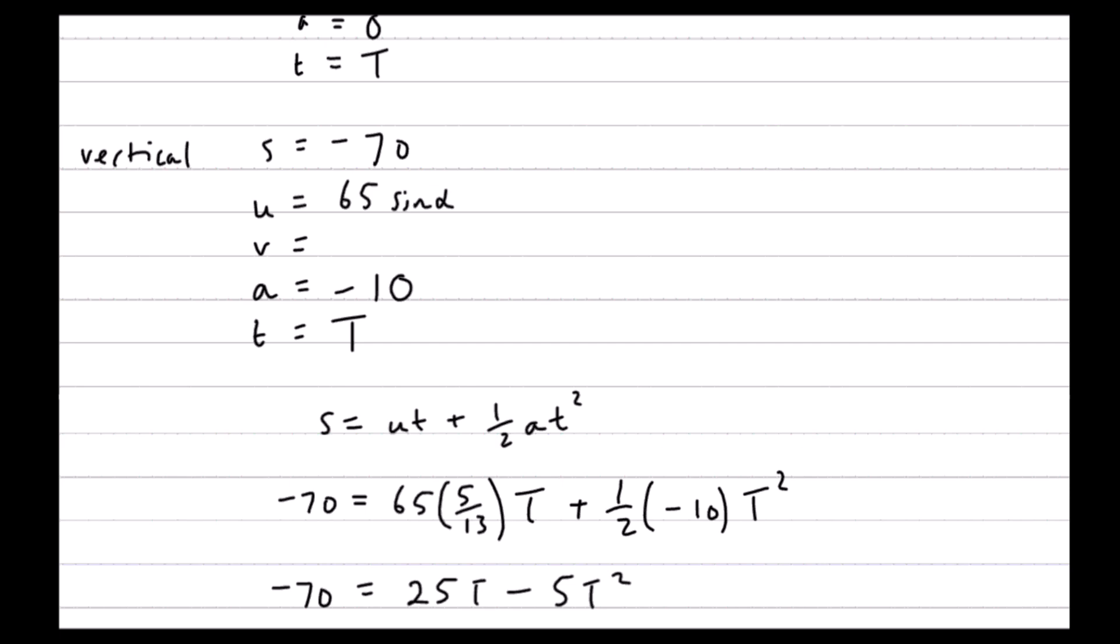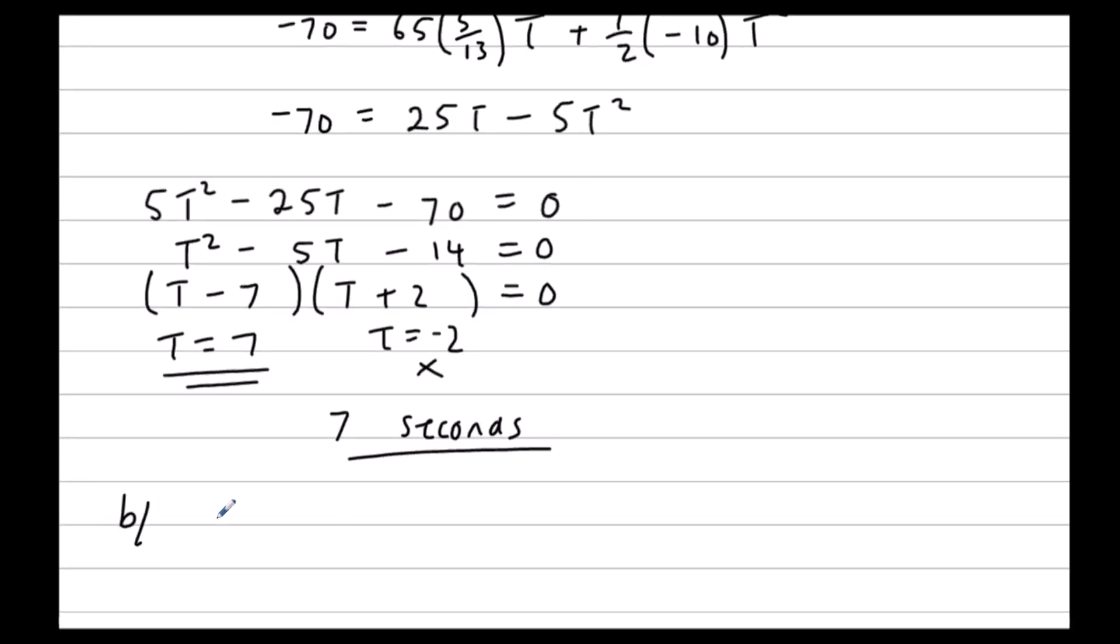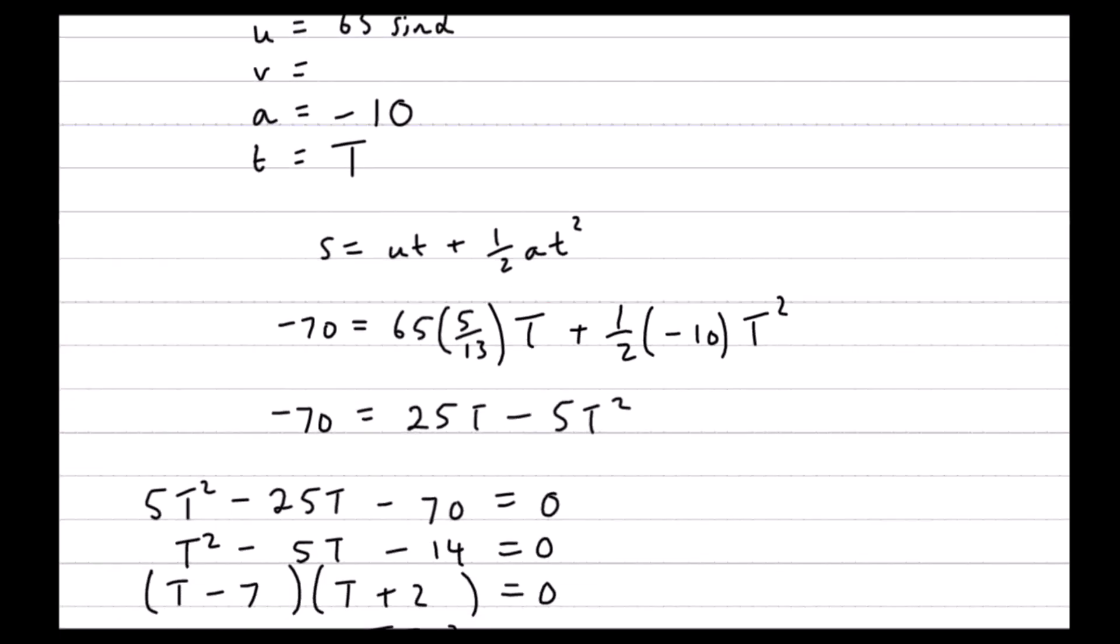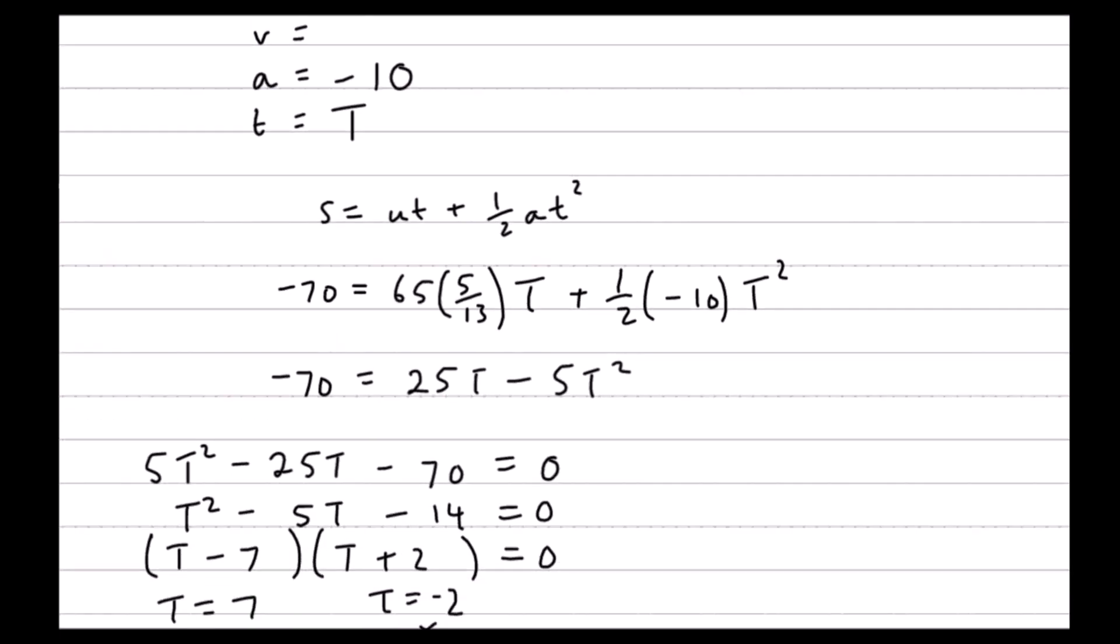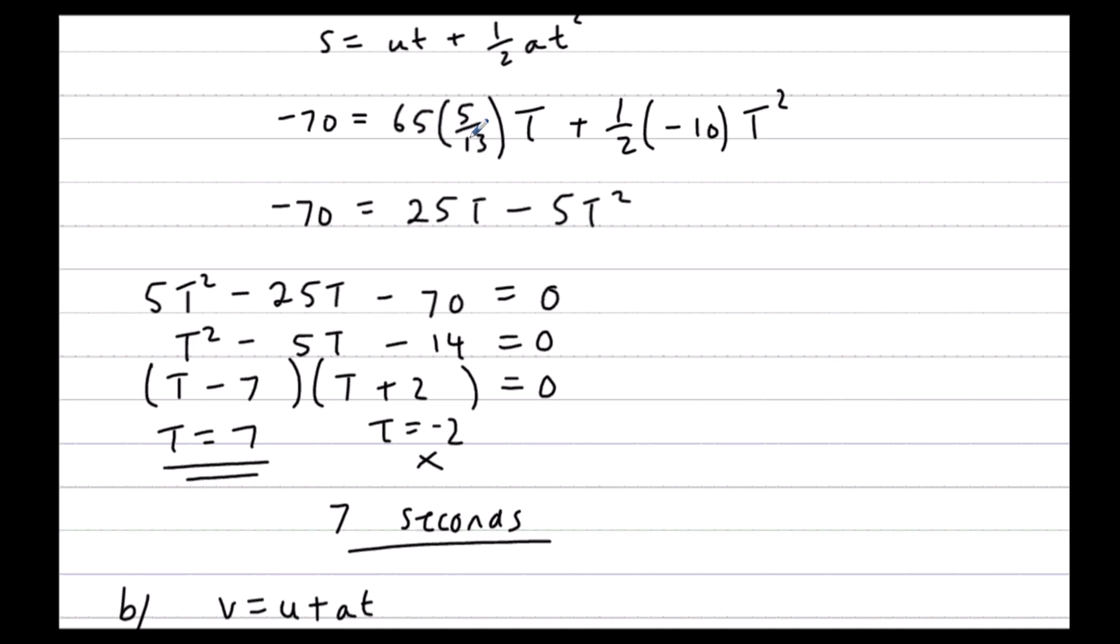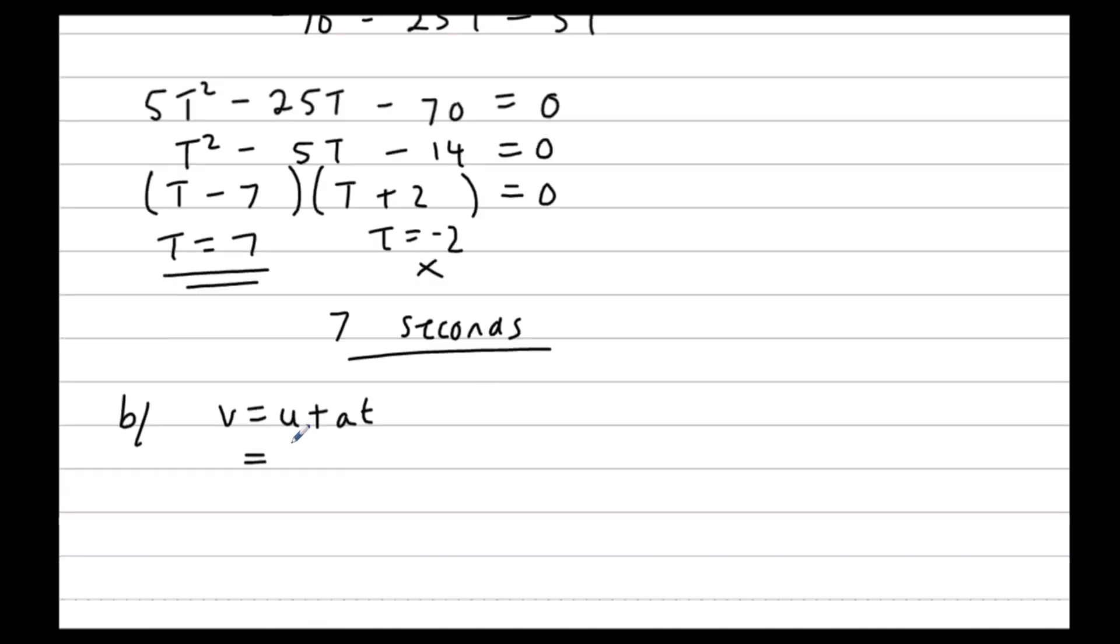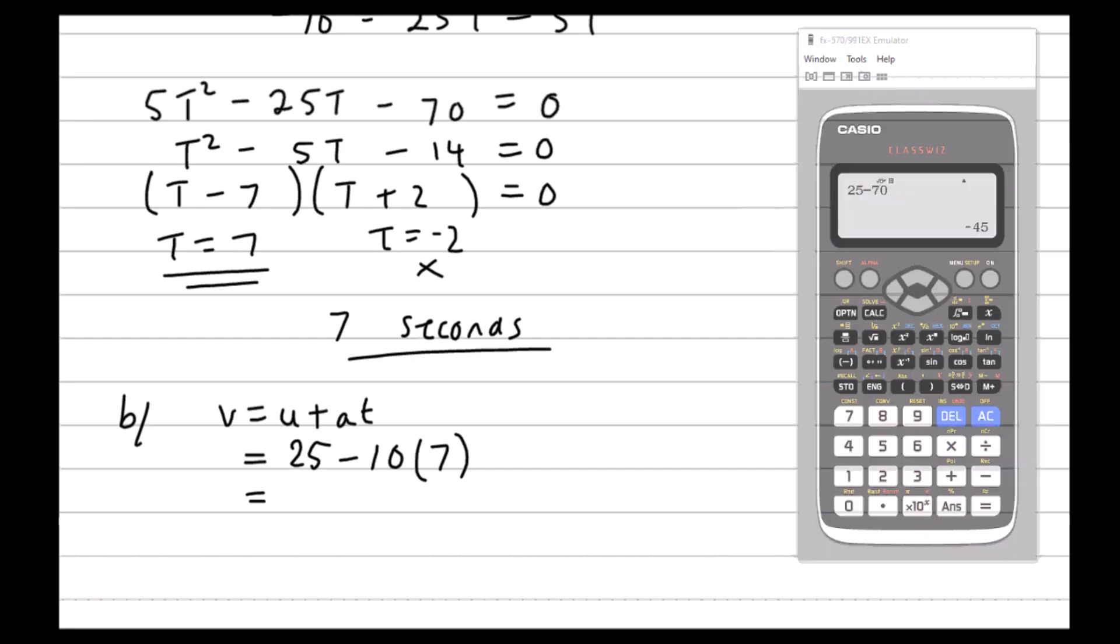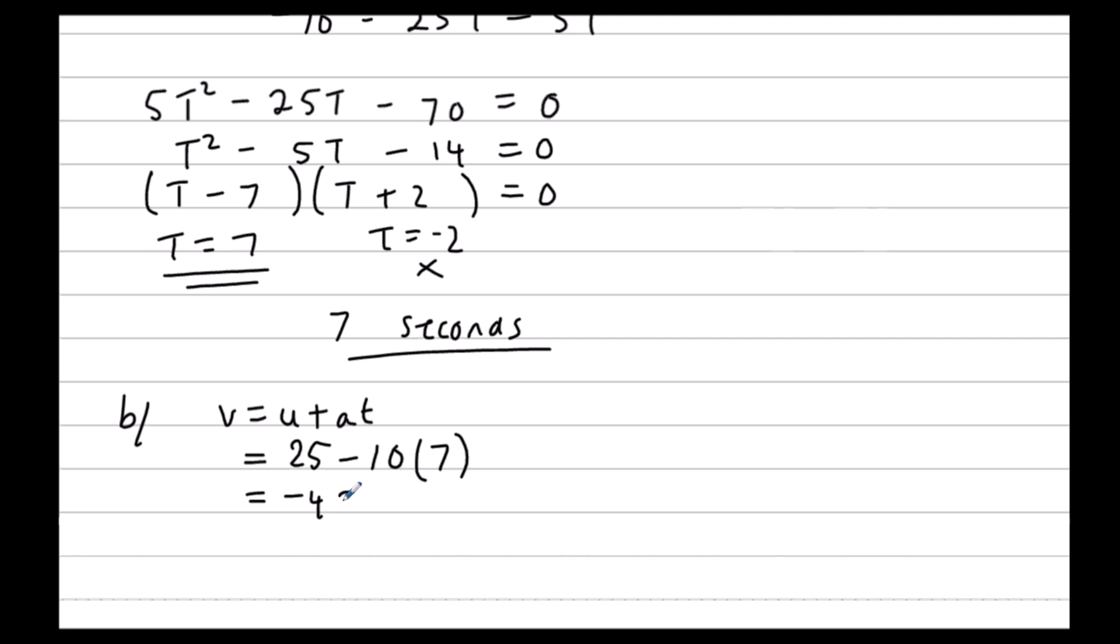So V equals U plus AT. U was 65 sin alpha, which was 25. A was negative 10, time was 7. So 25 take away 70. Negative 45. So we've got down 45.